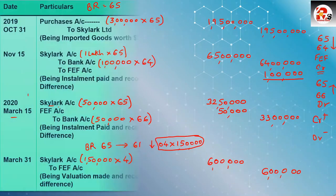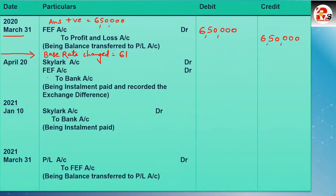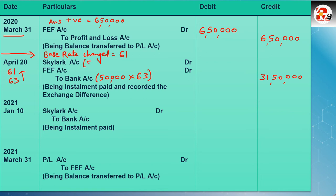Now the April transaction — 20th April, $50,000, rate 63. New base rate is 61, current rate is 63 — rate increased, so FEF is debited. Calculation: $50,000 × 63 = ₹31,50,000 (credit/bank side). Base rate: $50,000 × 61 = ₹30,50,000 (debit/parties side). FEF debit = difference of ₹1,00,000. All transactions follow the same pattern — only amounts differ; the difference determines the FEF position.